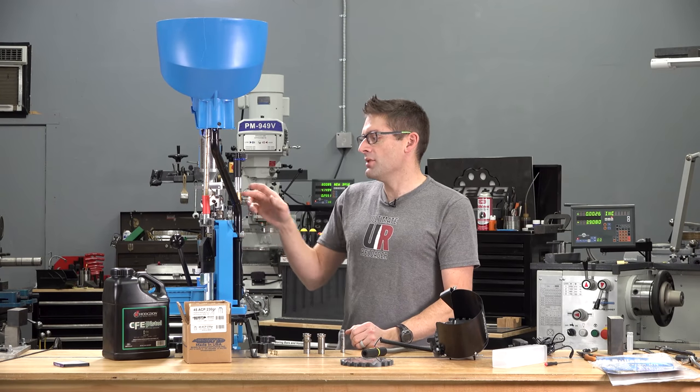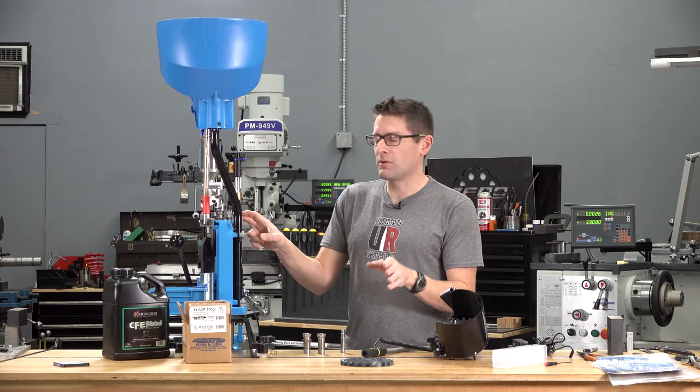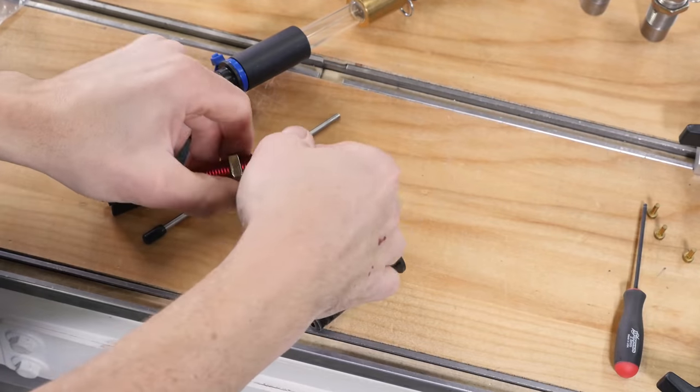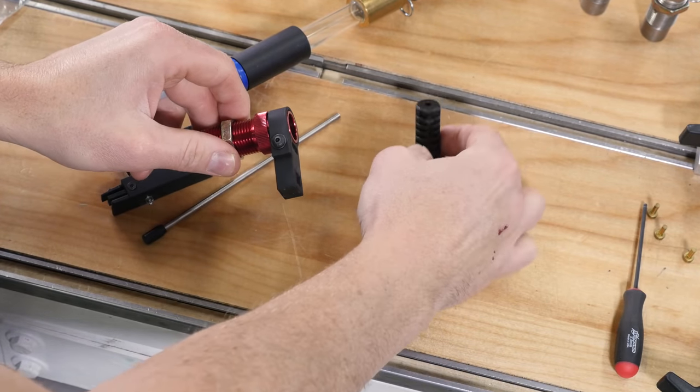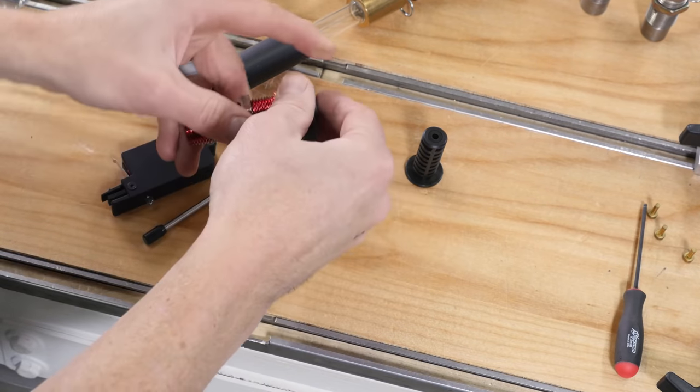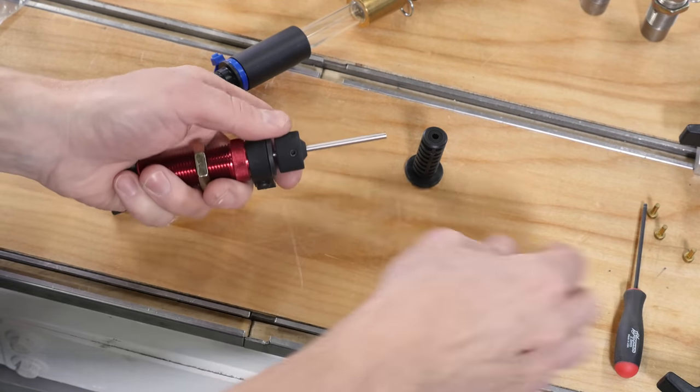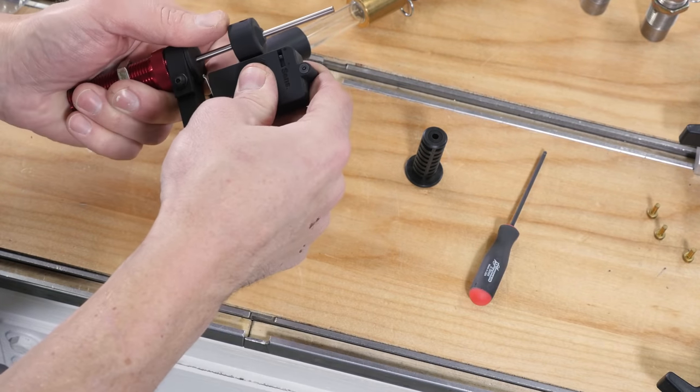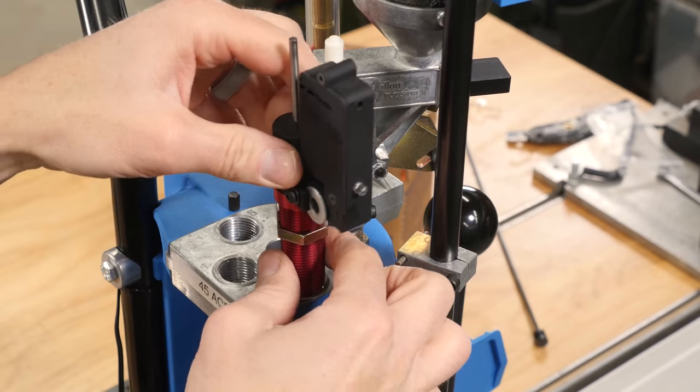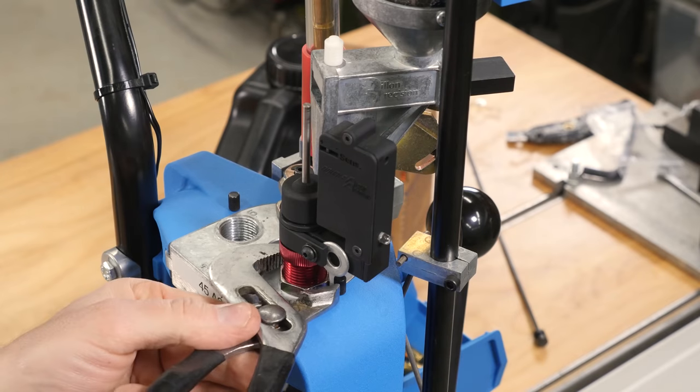Then in station number three there's the double alpha magnetic powder check die. I swapped the plungers, it was set up for rifle on another press that I had set up with it, put the pistol plunger in, got the height set accordingly. Again I've got multiple videos that show all the nuance of setting up this powder check die.